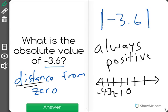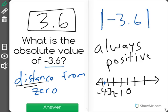Negative 3.6 would be in between 3 and 4 here and it would have a distance of 3.6 from zero. So the absolute value of negative 3.6 is 3.6.